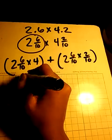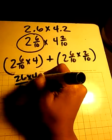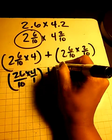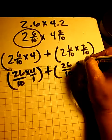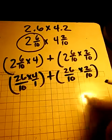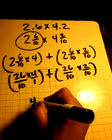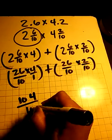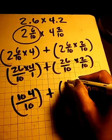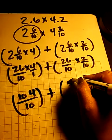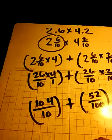So we have 26 tenths times 4, plus 26 tenths times 2 tenths. 26 times 4 is 104 tenths, plus 52 one hundredths.